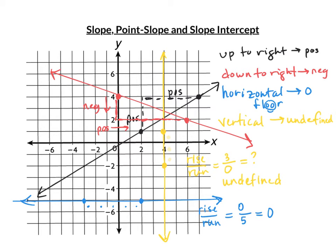Summary: if a line goes up and to the right, it's positive slope. Down and to the right, it's negative slope. Flat, like the floor — horizontal — it has zero slope. Vertical, like a wall, has undefined slope. Important distinction: zero is a slope — it is a number. Undefined is not a number. So when someone says a line has 'no slope,' don't think that means zero. Zero is a slope; 'no slope' would be a vertical line.